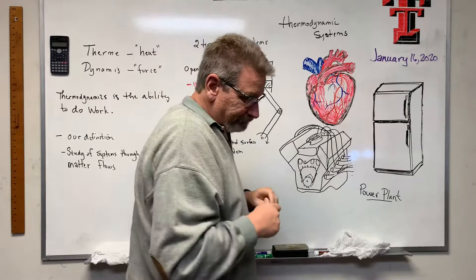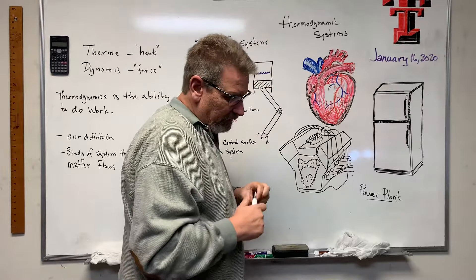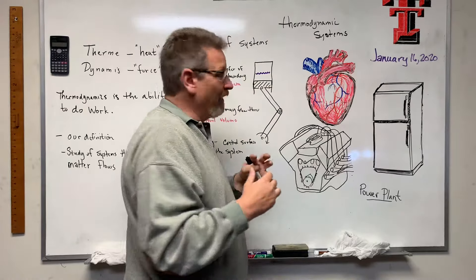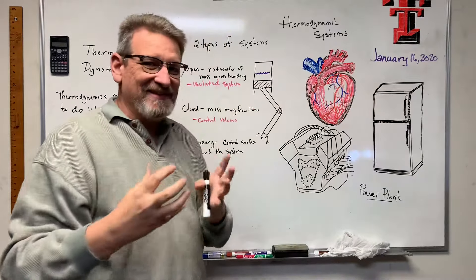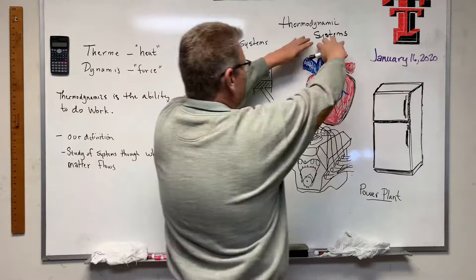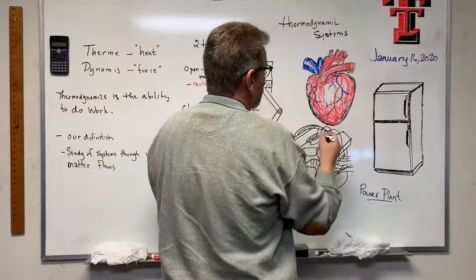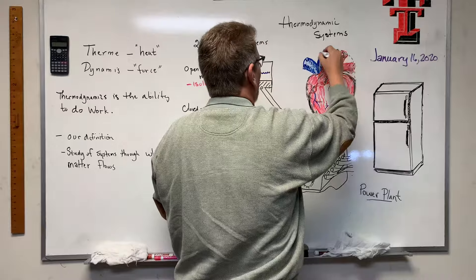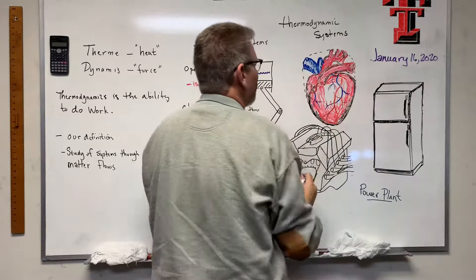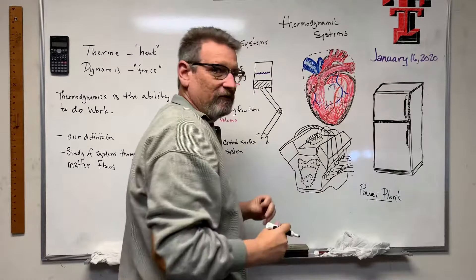We're going to look at systems and how they interact with the properties of that material that's going through the system and then how they act with their surroundings. Here's an example: a human heart. That would be a system. The surroundings is anything outside of that system.